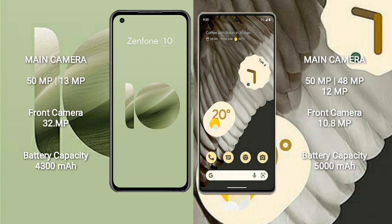The Asus Zenfone 10 has a dual rear camera setup with 50 megapixels plus 13 megapixels, and a 32-megapixel front camera. The Google Pixel 7 Pro has a triple rear camera setup with 50 megapixels, 48 megapixels, and 12 megapixels, and a 10.8-megapixel front camera.